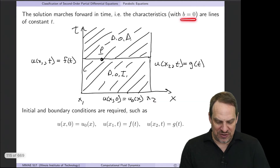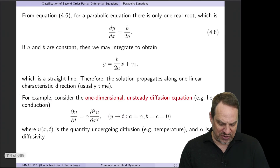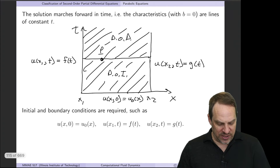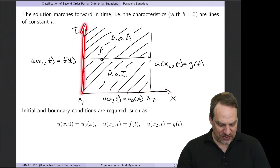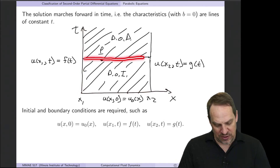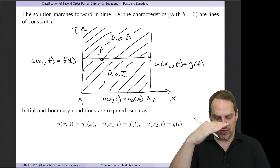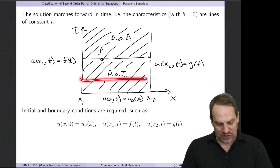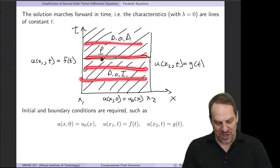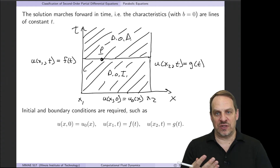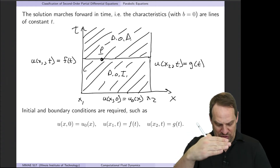Because b = 0, the characteristic reduces to y = constant, which in the x-t domain is a straight line parallel to the x-axis, corresponding to a given time. So the characteristics evolve through the domain with increasing time, just as you would expect physically—that's the propagation of the solution.